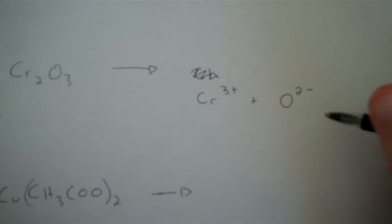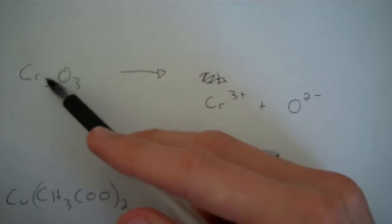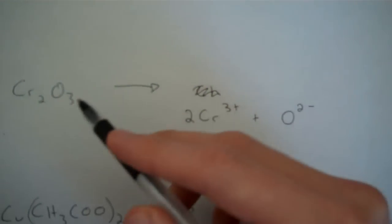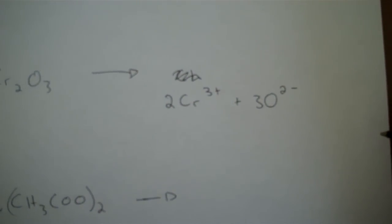So these are my 2 ions, but I need to know how many of each one I have. So I look back at the original compound. I have 2 chromium ions, so I'm going to put a 2 in front of the Cr. And I have 3 oxide ions, so I'm going to put a 3 in front of the oxide.